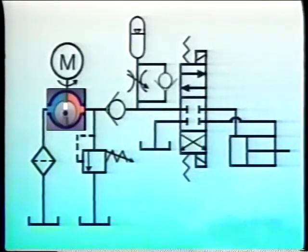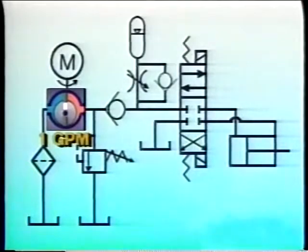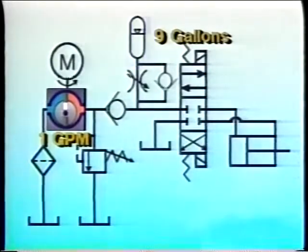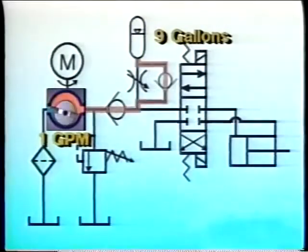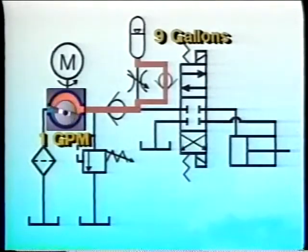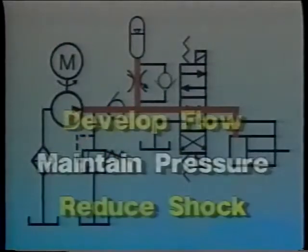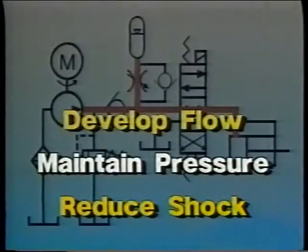The same work could also be done with a less expensive one-gallon-per-minute pump and motor, and with an accumulator that has a working volume of nine gallons. For nine minutes the pump would store energy as pressurized fluid in the accumulator, then supplement flow from the accumulator during the 10th minute.